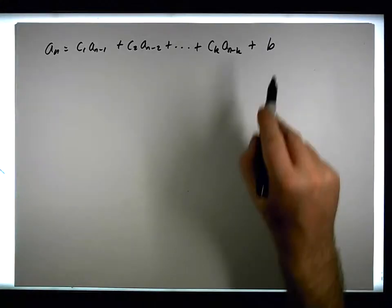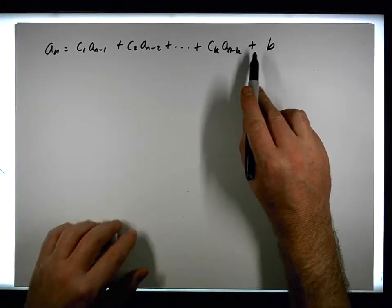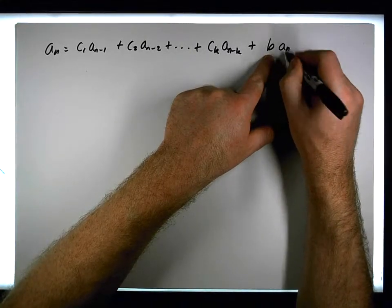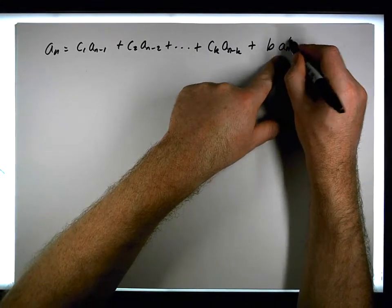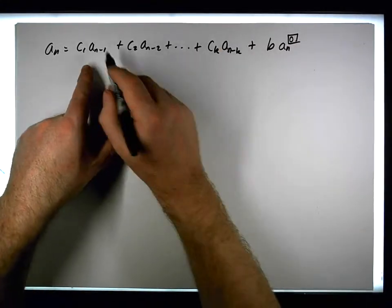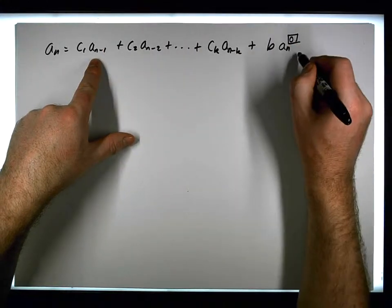Well, effectively, b is the same as a_n raised to the power of 0. So actually this exponent is different. We have to have the terms all having the same power.